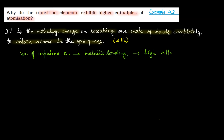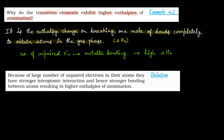NCERT वाला solution देखें इस example का। Because of large number of unpaired electrons in their atoms, they have stronger interatomic interaction and hence stronger bonding between atoms, resulting in higher enthalpies of atomization। Simple question था, मिलते हैं next example में। बाई-बाई।